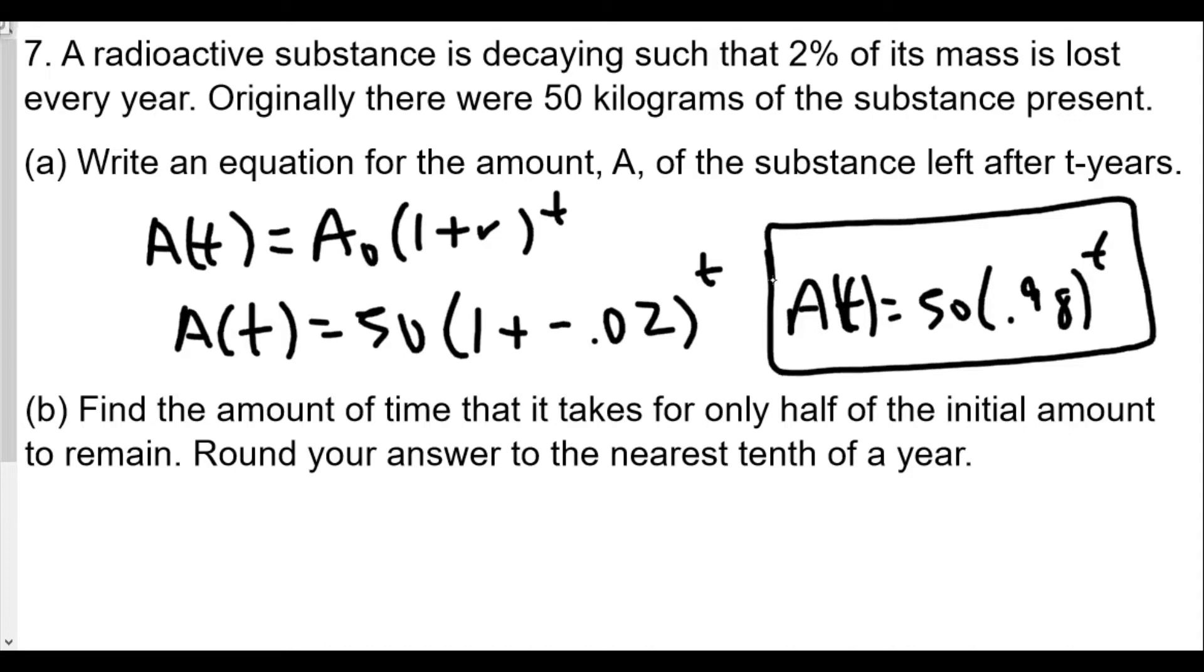Now part b: Find the amount of time it takes for only half the initial amount to remain. So if we're starting off with 50, we're going to end up with 25. So 25 equals 50 times 0.98 raised to the t power. And we're rounding our answers to the nearest tenth of a year.